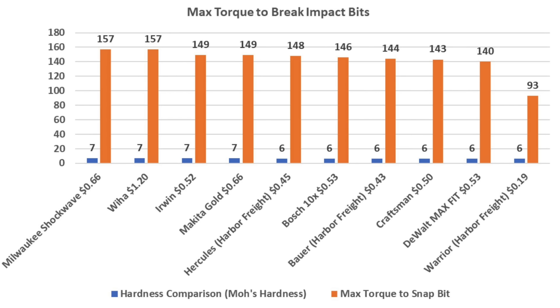If money is not a factor and it's all about high torque capability, the Milwaukee and the Weha showed the most brawn at 157 inch-pounds. However, the Irwin and the Makita were very close behind at 149. According to the Mohs hardness test, the strongest four bits were also made of the hardest metal. However, some of the other brands like the Hercules weren't too far behind.